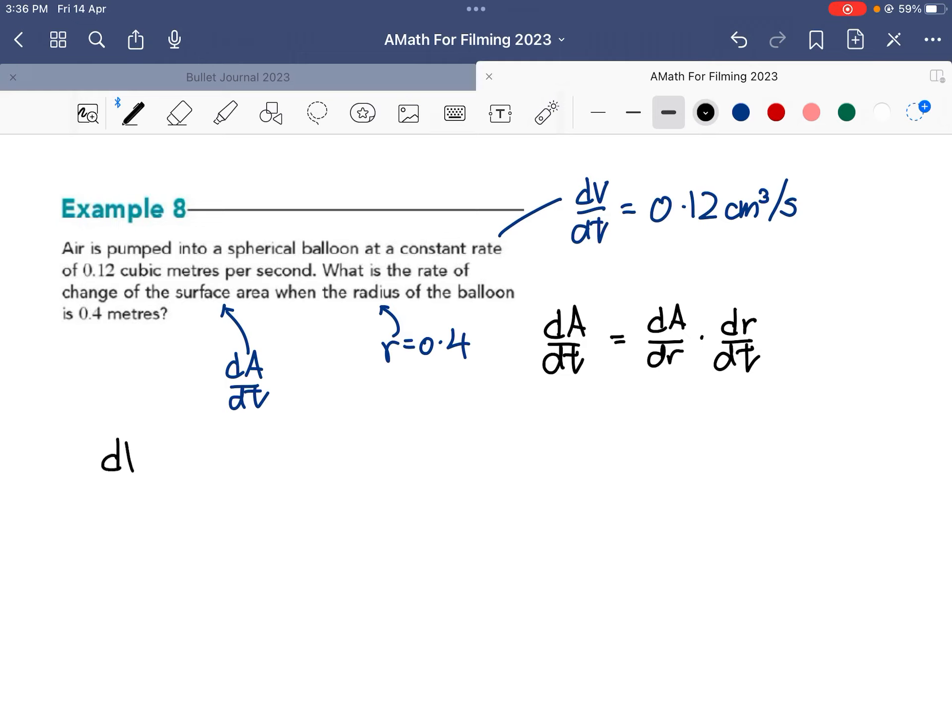So you notice that I cannot solve my question immediately because I need this dr/dt. So one extra step is to form another connected rate of change to find my dr/dt. So what I can do first, I put in dV/dt = 0.12, I got that from the question itself.